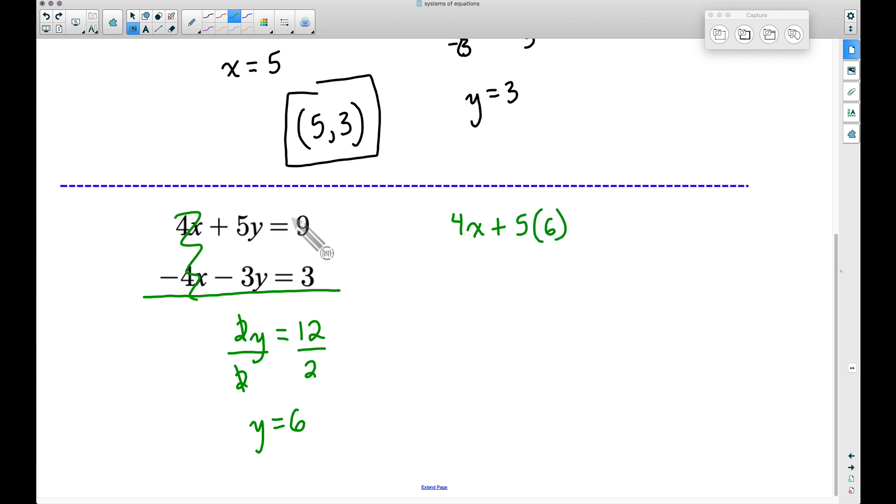What we want to do now is work on solving for x. So we have 4x plus 5 times 6 is 30, and this equals 9. Let's work on solving for x. We can subtract 30 from both sides, and when we do this, we now have 4x—because the 30 minus 30 cancels out—equals 9 minus 30, which gives us negative 21.